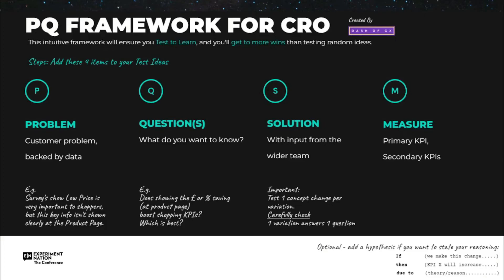Then S — the third item — is Solution. We go to the wider team and ask for input: design ideas, solution ideas. Again, one variation should loop back and answer one question. The fourth item is Measure — we need to set what we're going to measure before we start. You can also add a hypothesis if you want to state your reasoning, but it's actually optional. This is useful for anyone new to CRO — it helps guide you to build a test that will produce a learning. Without this, someone new could easily go off course and create a variation which won't produce a learning.